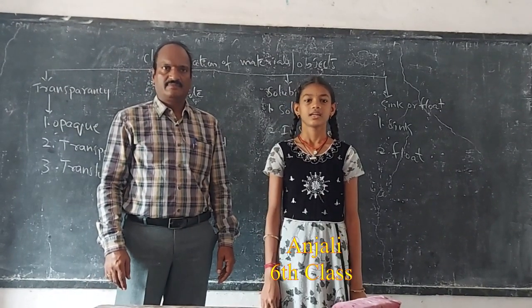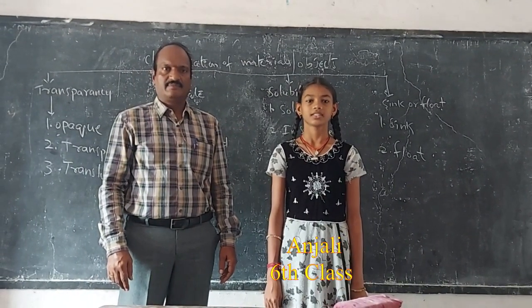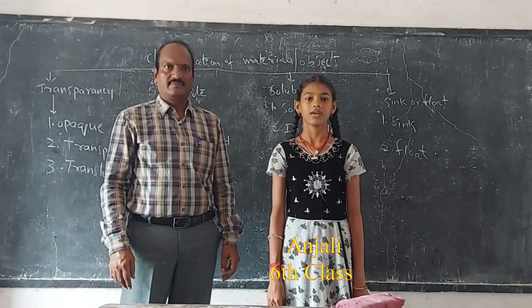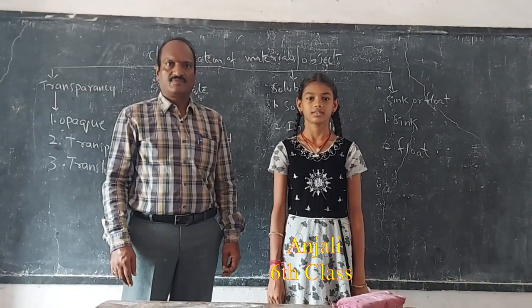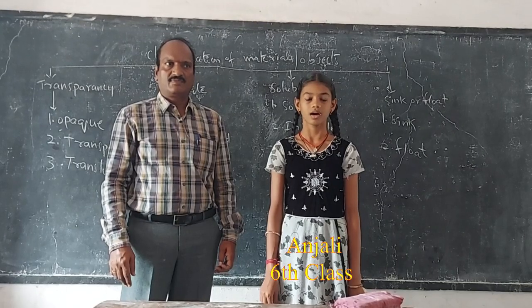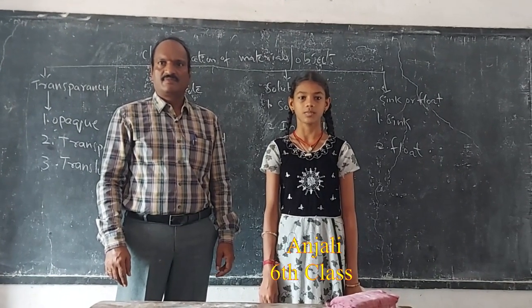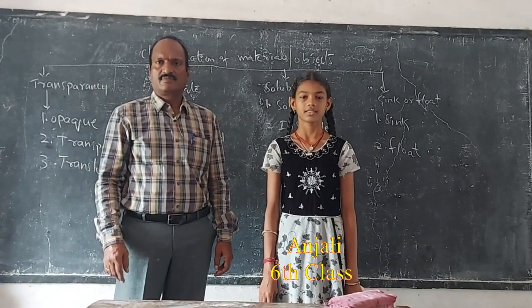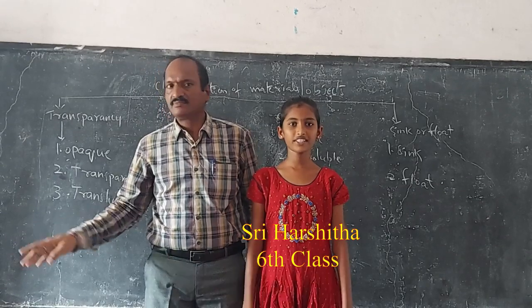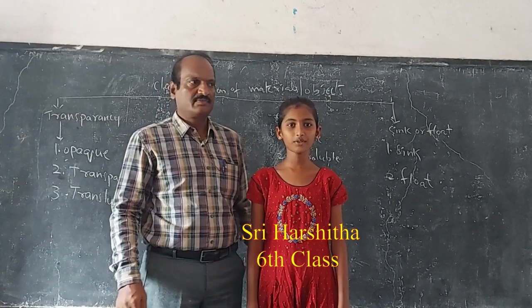Transparent. The objects that allow light through them are called transparent objects. Example: glass.